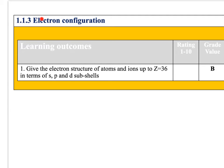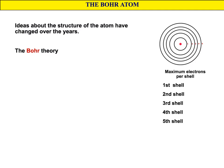In this video we're going to look at electronic configuration, using the terms S, P and D subshells. At GCSE you would have looked at the Bohr theory, the Bohr diagram — this is a simplified version of what we're going to go into today.